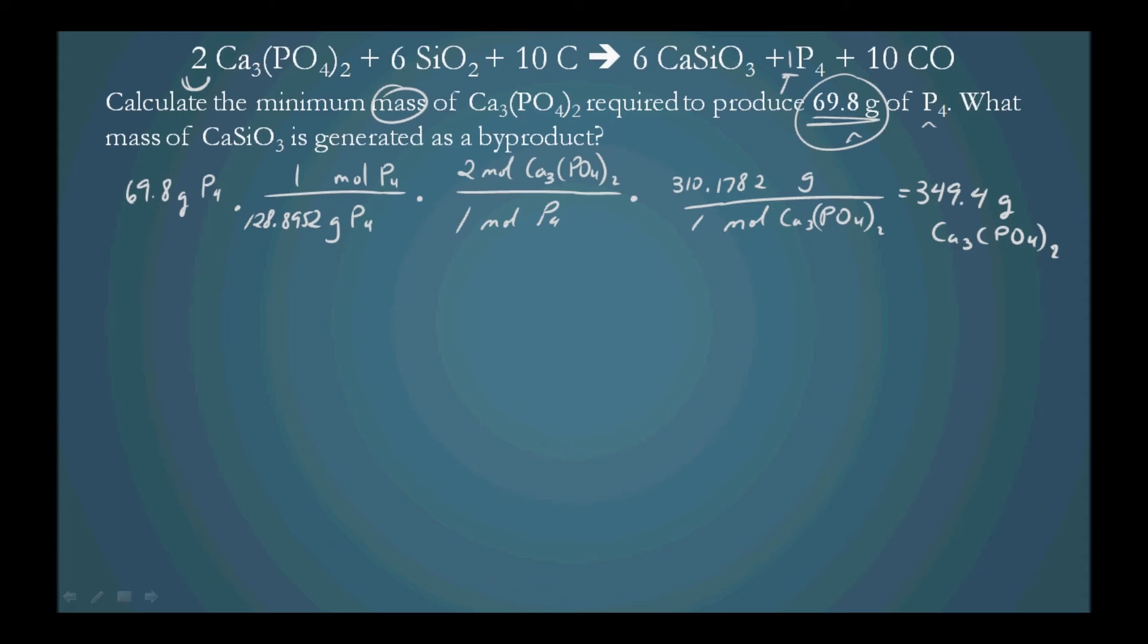What we find is we get 349.4 grams Ca3(PO4)2 required to produce 69.8 grams of P4. So we have the mass of the product we want. We convert this mass into moles, convert the moles product into moles reactant, the moles reactant into grams reactant, because we want the mass of the amount of reactant needed. And that yields our final value here.